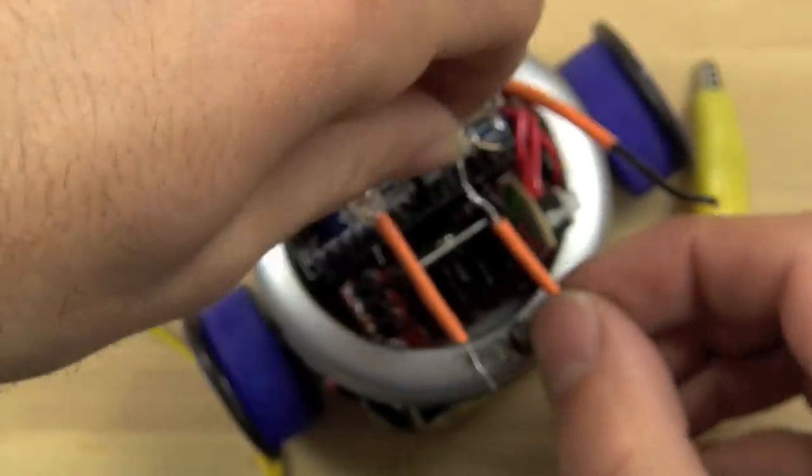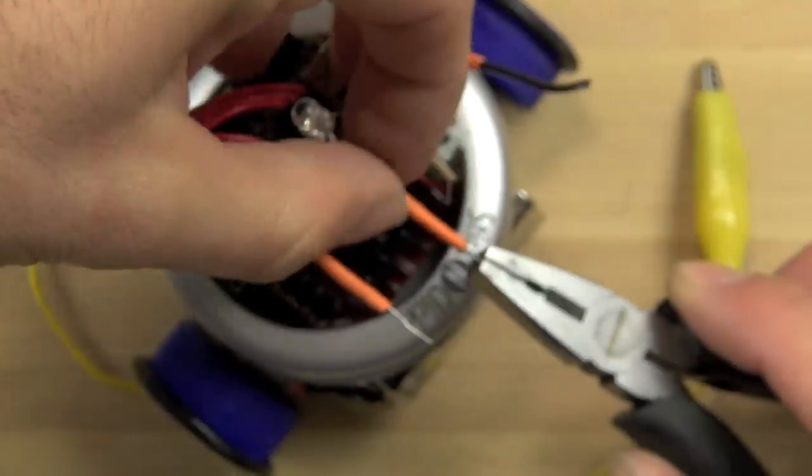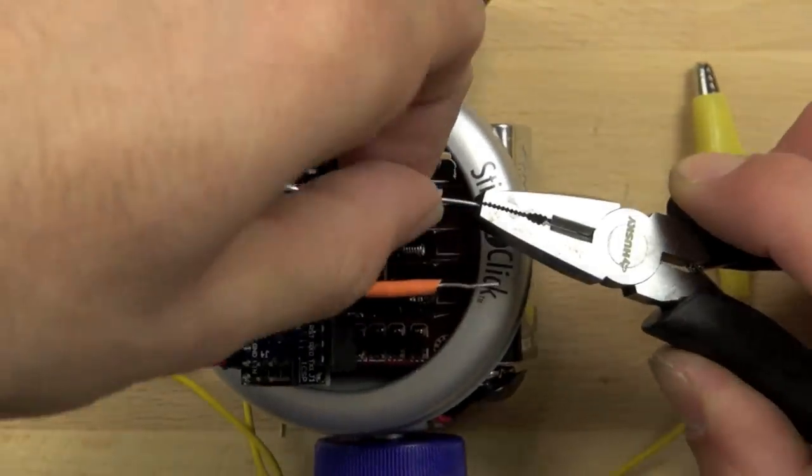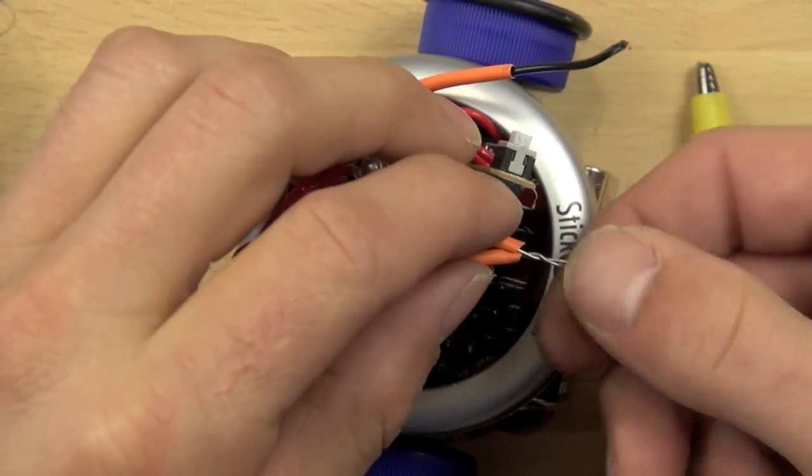Okay. So now what we're going to do is we are sliding the other piece of heat shrink tubing up and then we're going to twist the two pieces together.